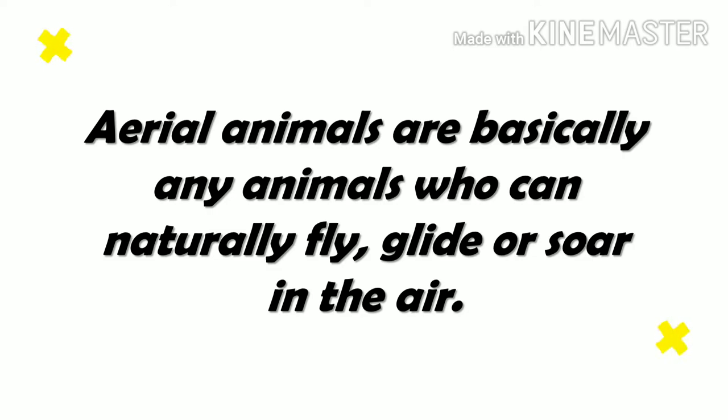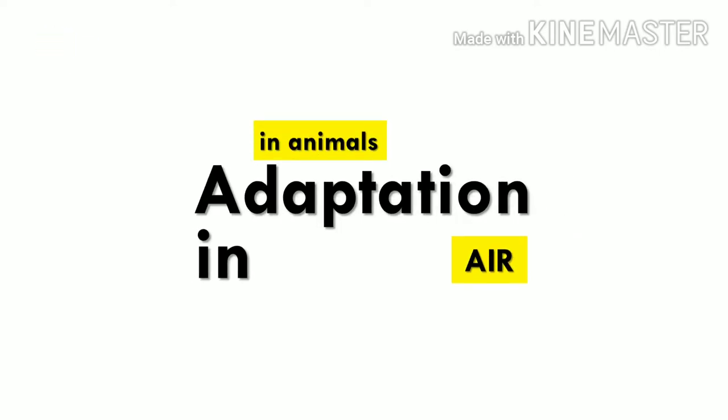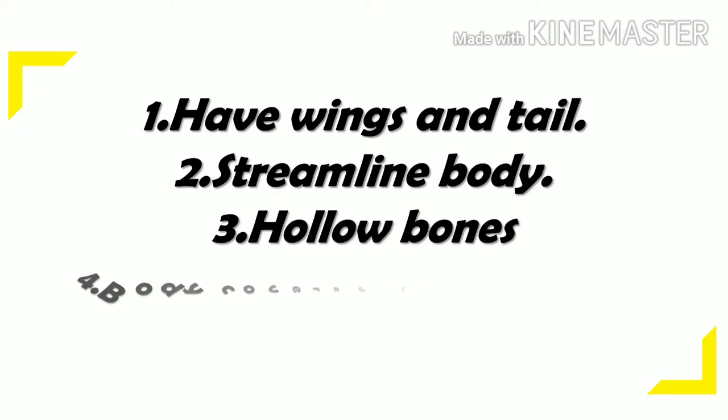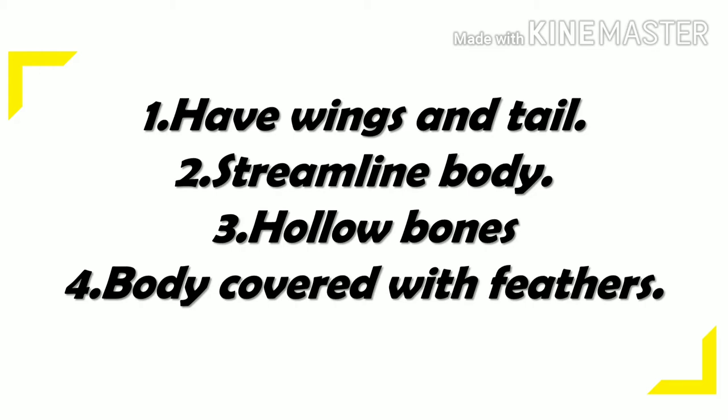Aerial animals. Aerial animals are basically any animals that can naturally fly, glide or soar in the air. Adaptation in animals in air: They have wings and tail, a streamlined body, hollow bones, and bodies covered with feathers. Birds have wings to fly high up; their tail acts as a rudder and helps change direction. A streamlined body helps cut through the air easily. Hollow bones help them become lighter. The body is covered with two kinds of feathers: body feathers covering the whole body, and flight feathers covering the wings and tail.